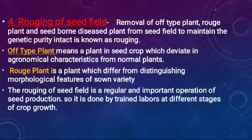The fourth point is Rogging of seed field. Removal of off-type plants, rogue plants, and seed-borne disease plants from the seed field to maintain genetic purity intact is known as Rogging.